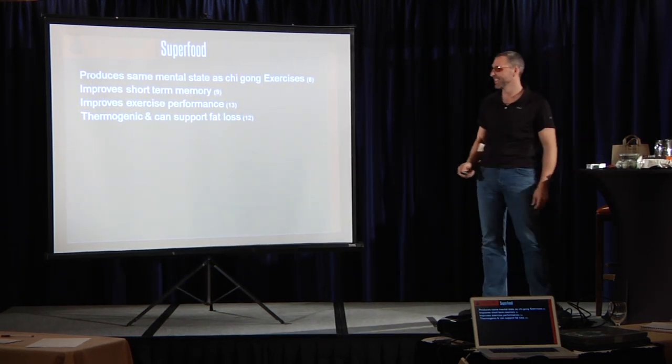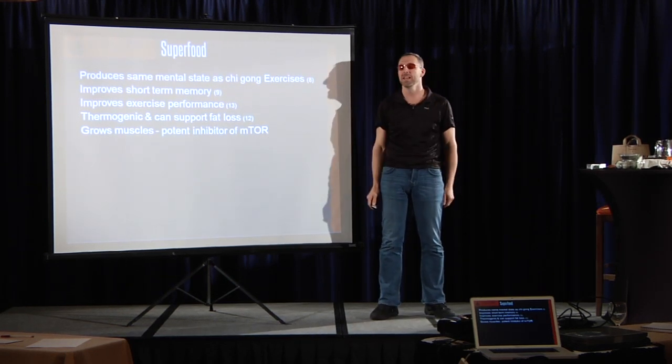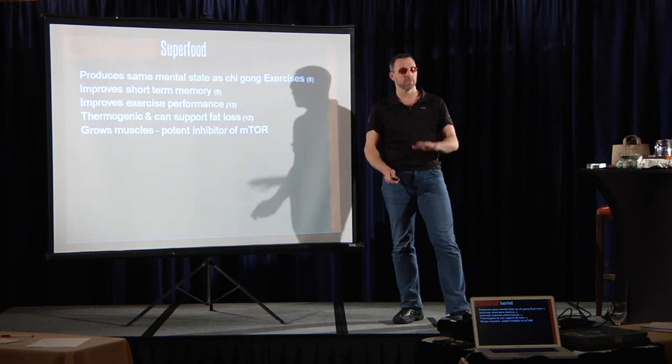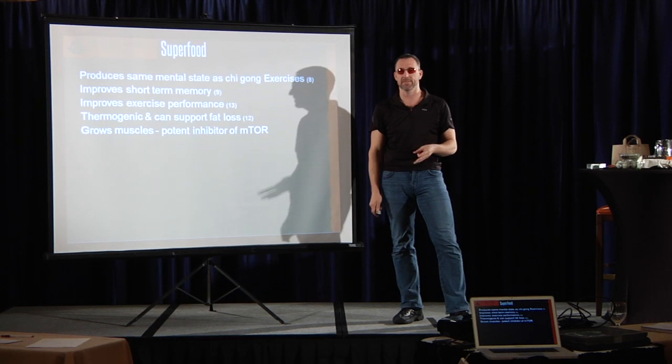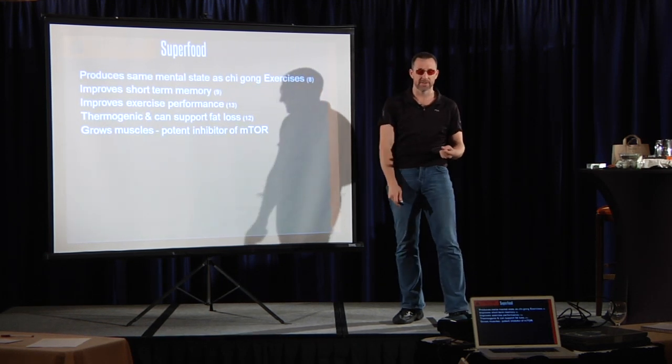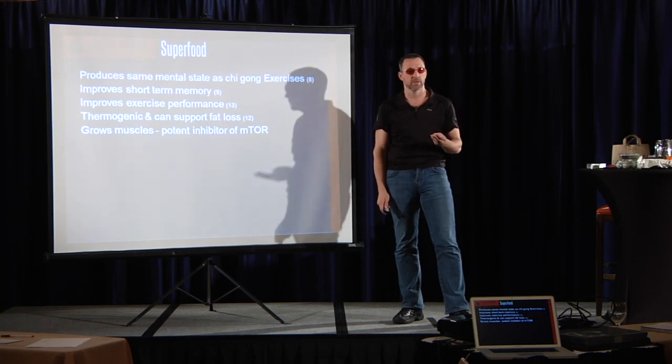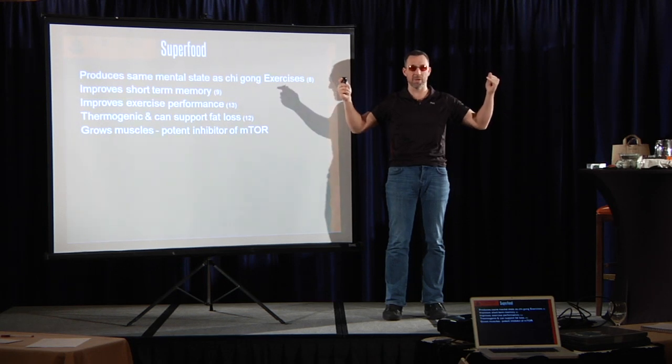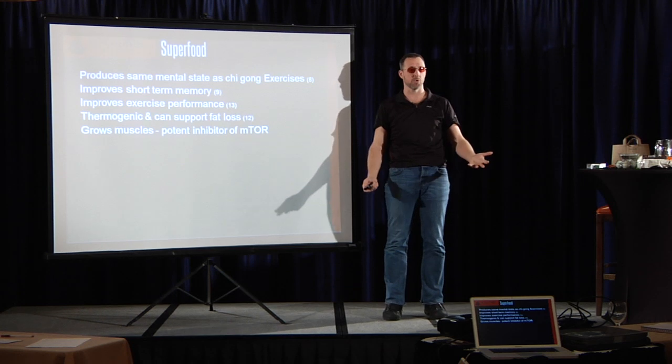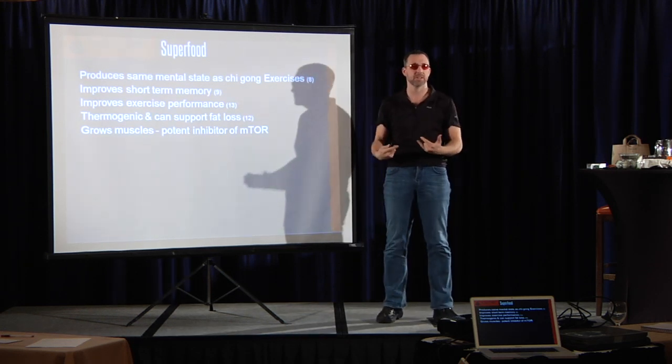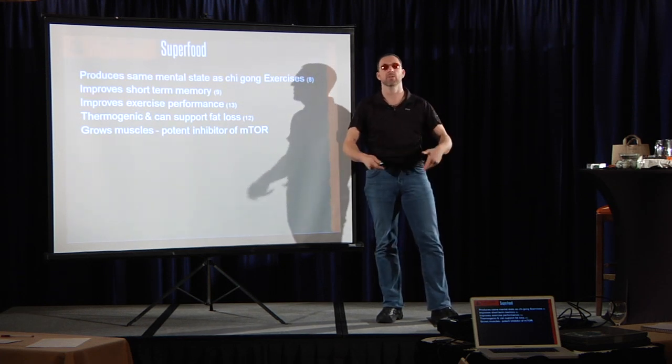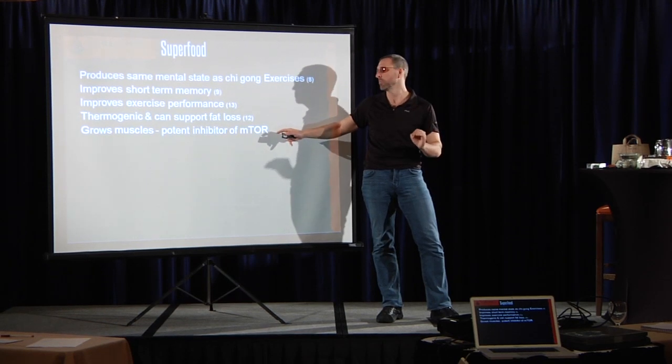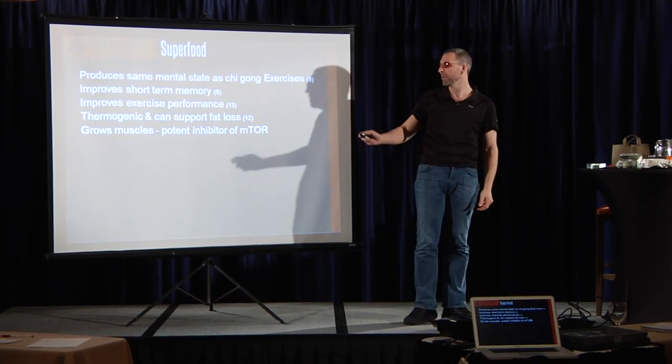There's this thing called mTOR stacking. If you do the bulletproof intermittent fasting protocols, you suppress your mTOR. There's fasting, and there's exercise, and there's coffee or chocolate. So what you do is you suppress your mTOR, and then when you stop suppressing it, it springs back, and you build muscle. The way I actually got more ripped when I wasn't exercising was I was doing mTOR stacking. I was doing intermittent fasting in the morning, and I was having coffee with butter in it.